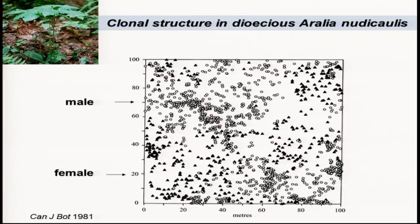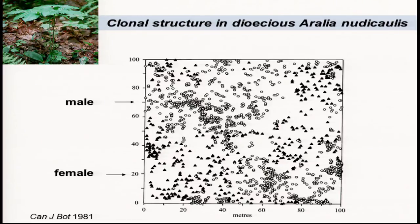Now I want to switch to dioecious species. This is work I did with James Thompson when I first moved to Toronto from Berkeley. I was very interested in sex ratios and the spatial distribution of males and females in populations. We were rather foolhardy — our idea was to go into the boreal forest and map a full hectare plot, mapping every single ramet of wild sarsaparilla, Aralia nudicaulis.